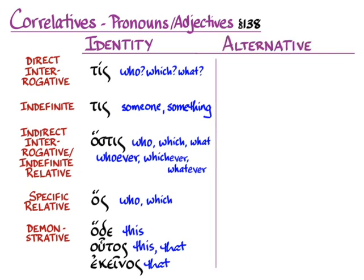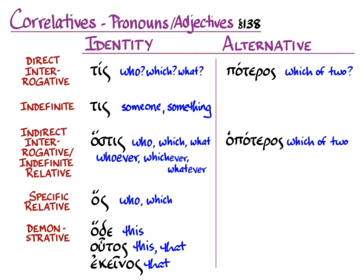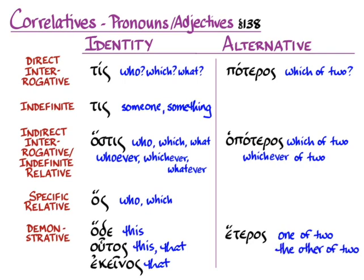We also get pronouns and adjectives that talk about alternatives. We can ask poteros, meaning 'which of two?' I'm not going to give you an enclitic indefinite version — there is one, but it's incredibly rare. The indirect interrogative follows the pattern: hopoteros, meaning 'which of two.' This is an adjective or pronoun that declines in all genders: hopoteros, hopotera, hopoteron. As an indefinite relative it means 'whichever of two.' And there is a demonstrative — heteros, hetera, heteron — which means 'the other of two,' depending on context.